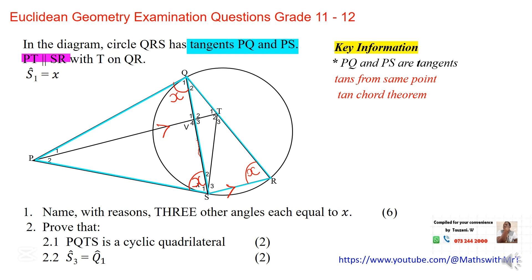We have to be very careful because the diagram may not indicate that the lines are parallel, but it is written that line PT is parallel to line SR. What do we know about parallel lines? We know about alternating angles, corresponding angles, and co-interior angles. If you look at the position of angle T1 in relation to angle R, you can see they form an F-shape, which means those two angles are equal because they are corresponding angles.